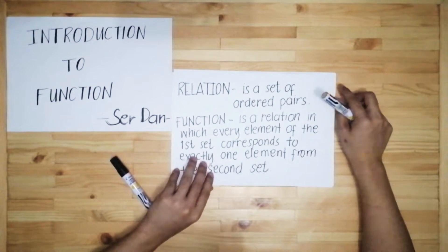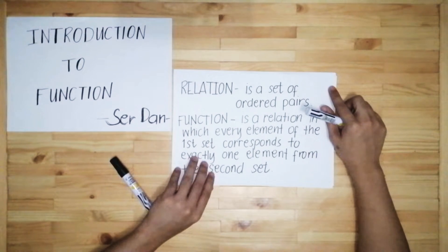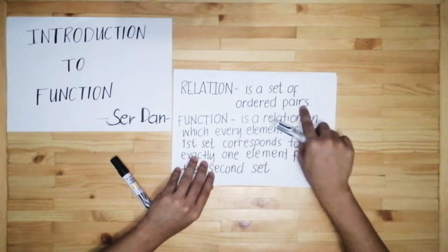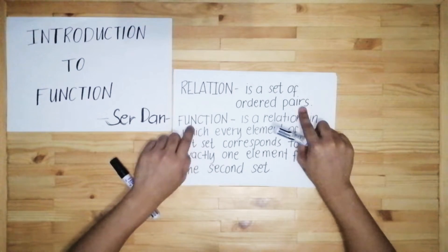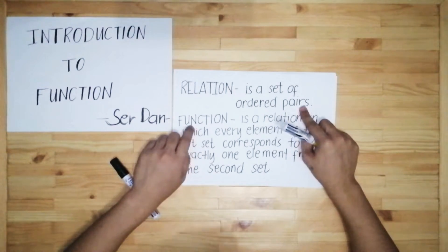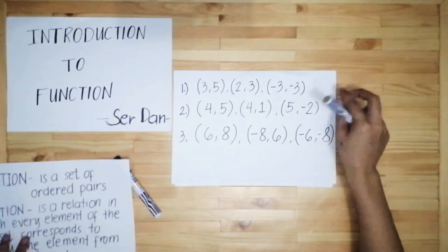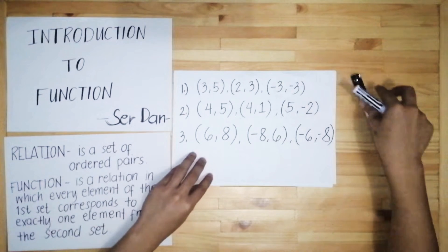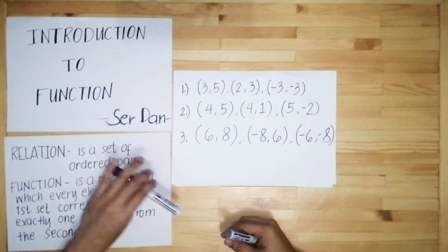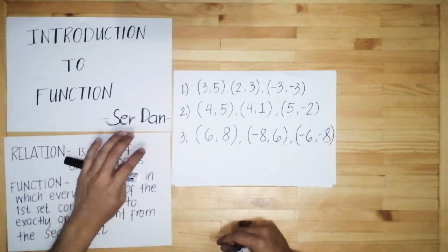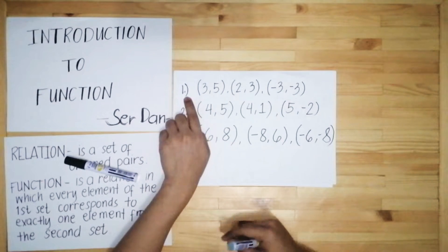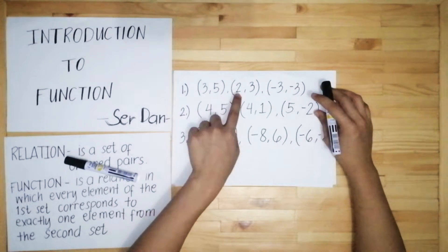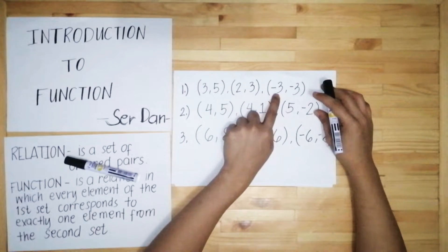To better understand this, I'll be giving some examples of relations or ordered pairs, and we will identify whether they are considered a function or not. We have here three examples of sets of ordered pairs — number one, number two, and number three.